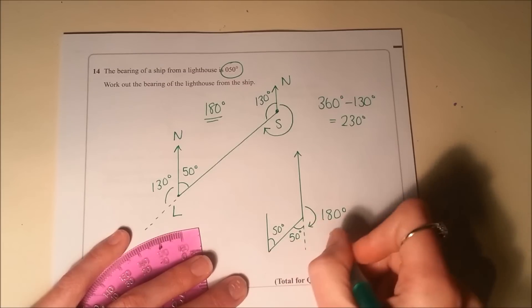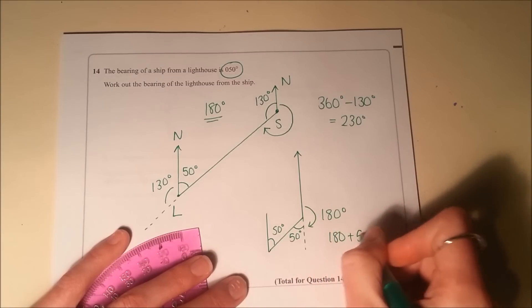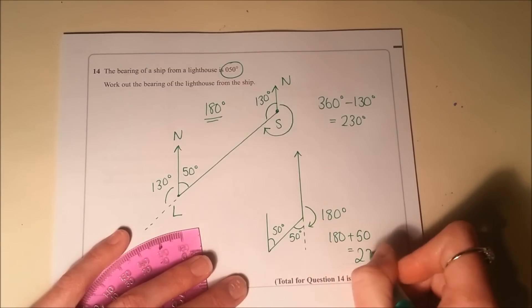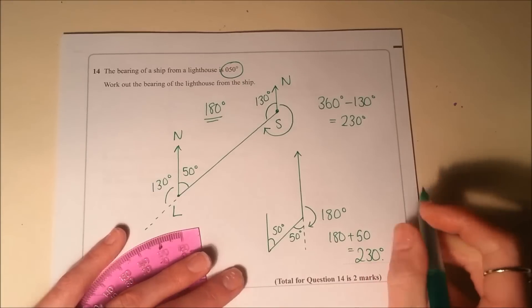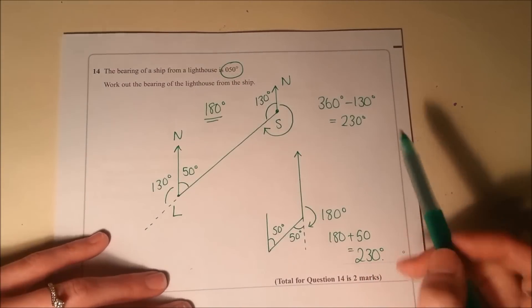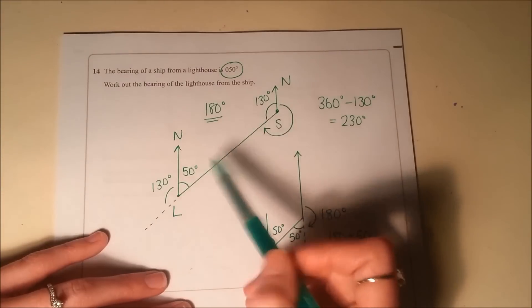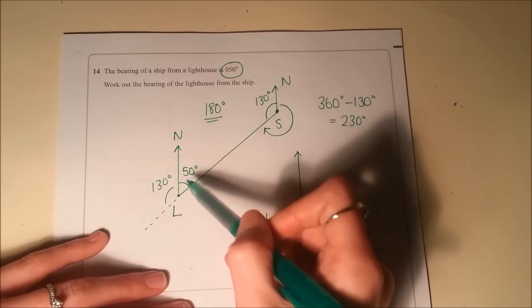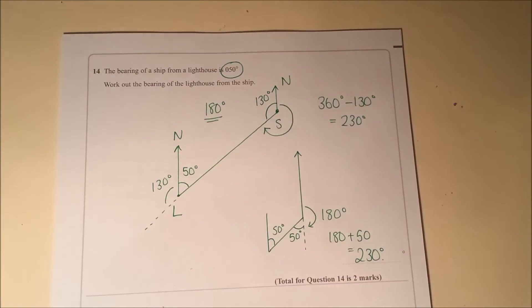So the total turn there is 180 plus 50, so again that's going to give you 230 degrees. But I actually think the easiest way of doing this question is remembering this fact. Inside that bearing shape, these two angles will always add up to 180.